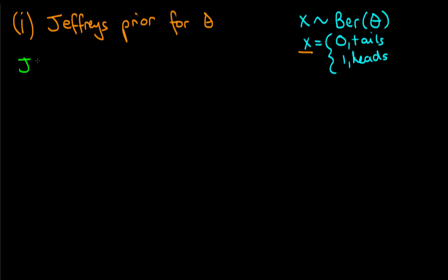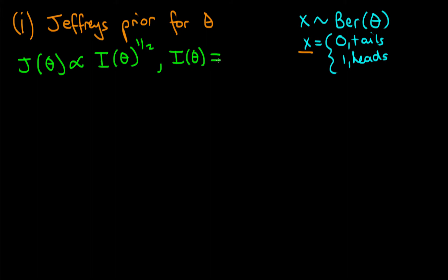The Jeffreys prior in terms of theta is proportional to the square root of the information matrix. The information matrix I(theta) is just a scalar here, equal to negative one times the expected value of d²l/dθ², where little l represents the log likelihood.